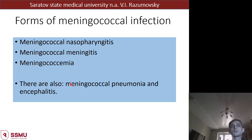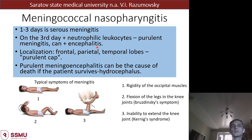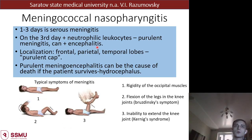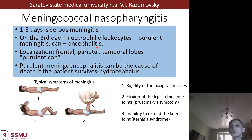There are 3 main forms of meningococcal infection: meningococcal nasopharyngitis, meningococcal meningitis, and meningococcemia. There are also meningococcal pneumonia and encephalitis. Meningococcal nasopharyngitis develops in the first 3 days as serous meningitis; on the 3rd day we can see neutrophilic leukocytes and purulent meningitis with encephalitis. Typical localization is in the frontal, parietal, and temporal lobes of the brain. All these disorders form purulent meningoencephalitis, which can be the cause of death. Sequelae include hydrocephalus. Typical symptoms of meningitis are visible on the slide, and manifestations will be further discussed in the neurology department.